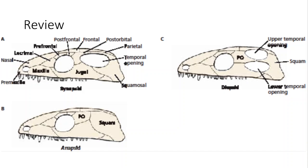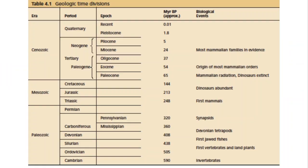Remember that all modern reptiles are either anapsids or diapsids. The anapsid design is found in turtles, and the diapsid design is found in all other reptiles, the dinosaurs, and the birds. The key is that the synapsid design makes it possible for the temporalis muscle to attach to the top of the skull, bulge out, and be significantly larger, giving the animal a much greater bite force.